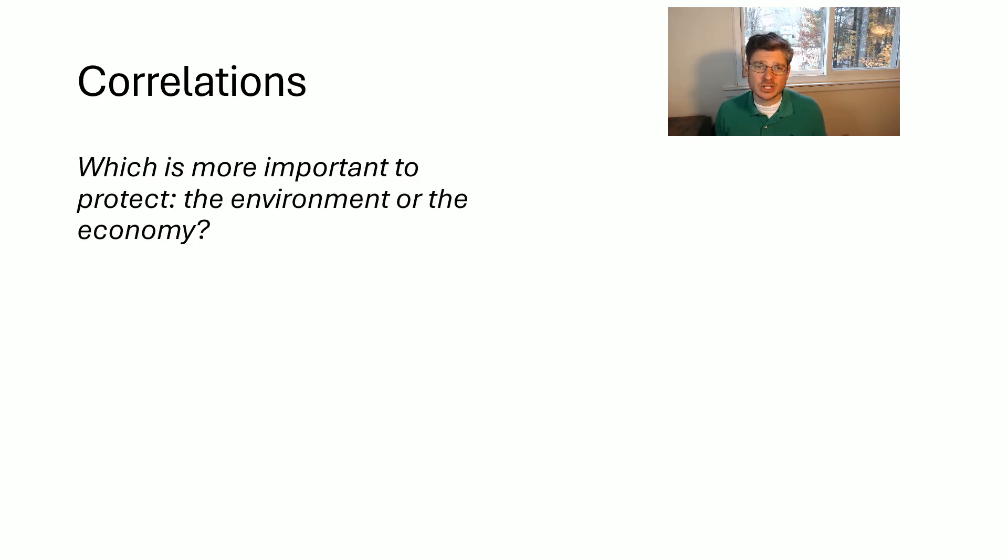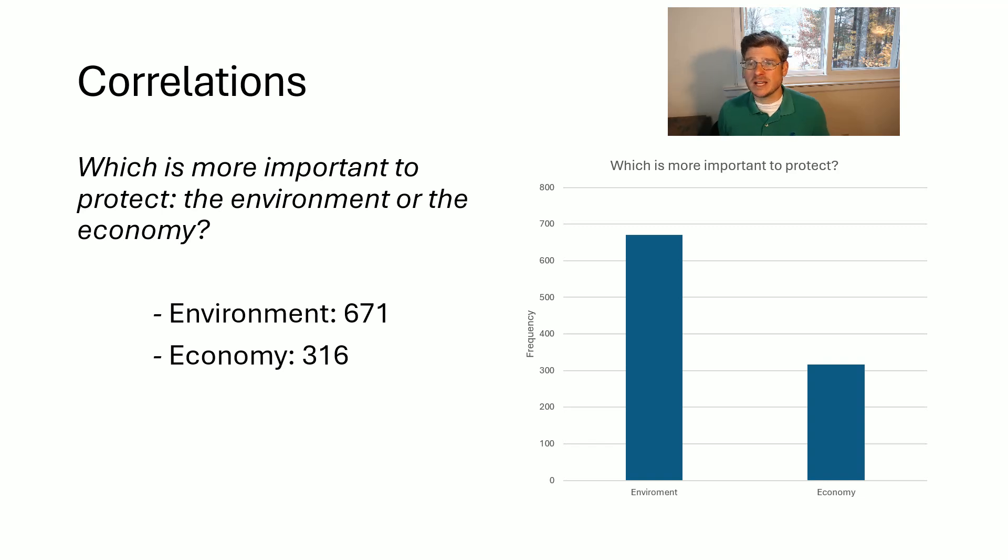So for example, this survey question was asked, which is more important to protect the environment or the economy? And I've read everyone that responded 671 said it was more important to protect the environment and 316 said it was more important to protect the economy. And so we can visualize this with a nice bar graph. We can see that clearly it looks like environment is the more popular one to protect. We have almost a two to one ratio there. But if you want to ask a deeper question, are men and women answering this question in the same way? Or do men and women feel differently about which one is more important to protect?